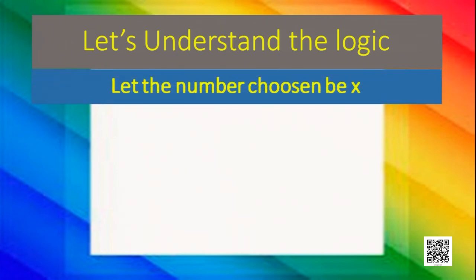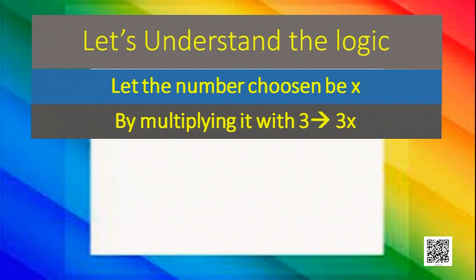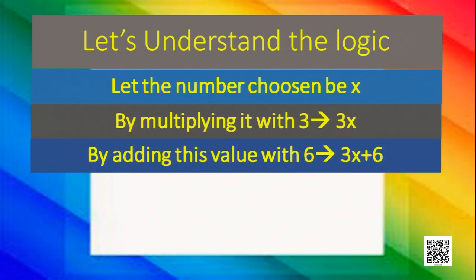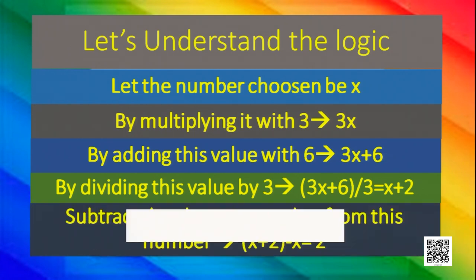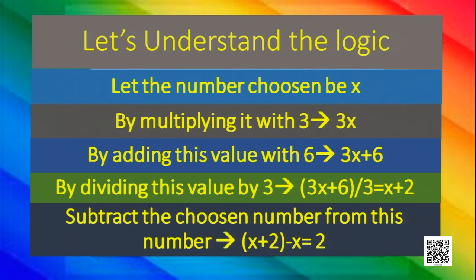Let's see the logic behind it. Let's take the number as x. If the number is x, then multiply with 3 to get 3x. Then add 6 with that value to get 3x plus 6. Then divide this value by 3: 3x divided by 3 gives x and 6 divided by 3 gives 2. So we obtain x plus 2. Now we have to subtract the chosen number, which was x. So subtracting x from x plus 2, what remains is 2.